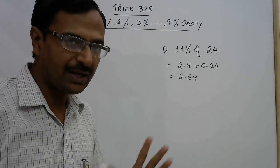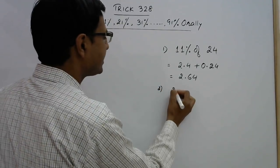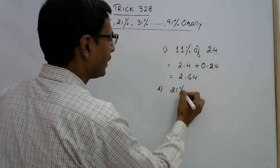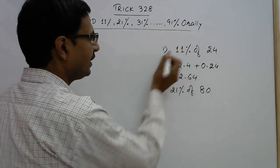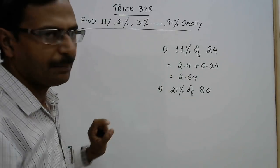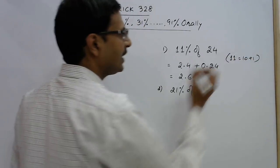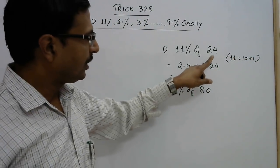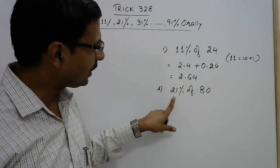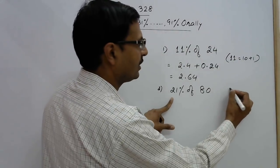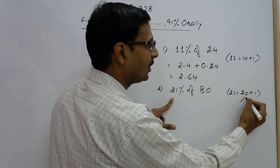Now take one more example, say we have this time 21 percent of any number, say we have 80 this time. Now see here, 11 percent basically, 11 is 10 plus 1, so that is why we have divided this by 10, so 2.4. So here we have 21, so 21 percent is basically 20 plus 1. So now we need to break down this 20 into 2 into 10.